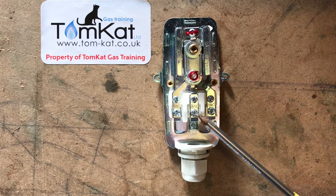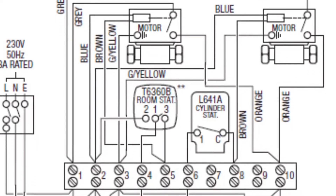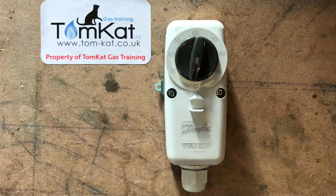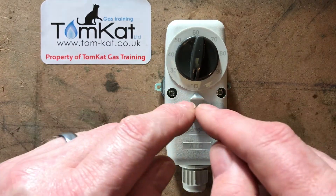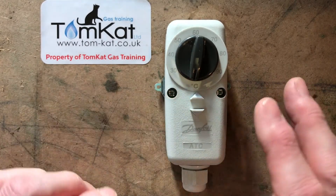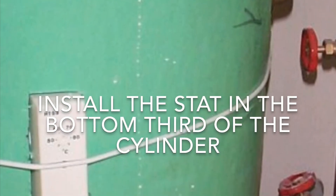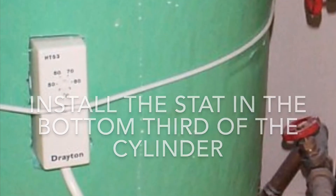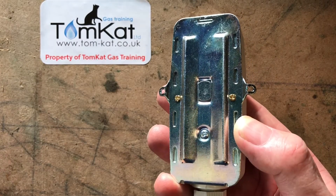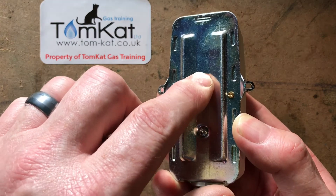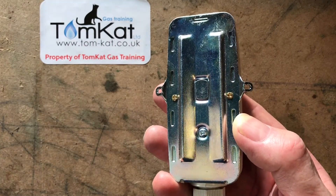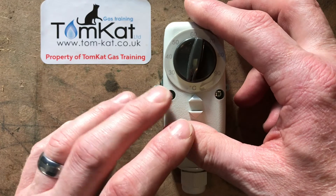The cylinder stat would be strapped to the cylinder using a cable secured all the way around it. This part here is what makes it work — the temperature bi-metal strip — which is pushed against the copper cylinder, not against the insulation, to regulate the temperature. When I turn the dial at the top, it will click on and off.